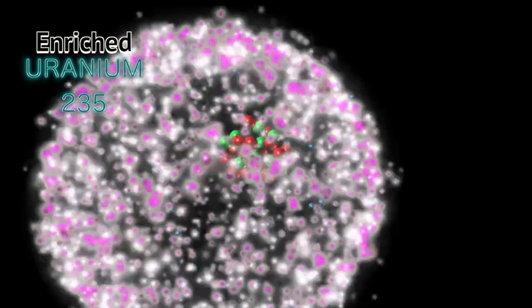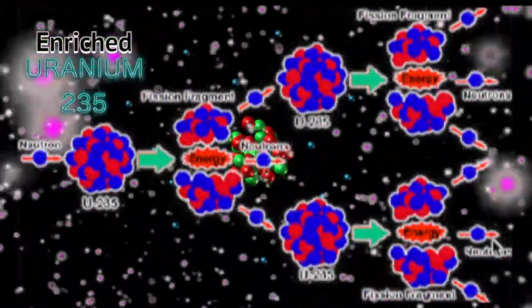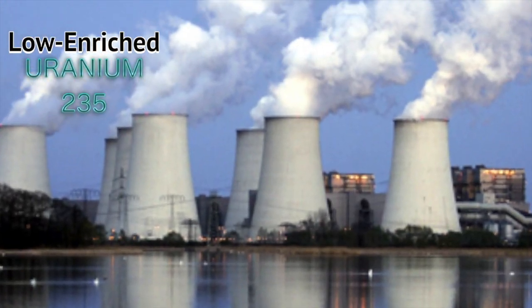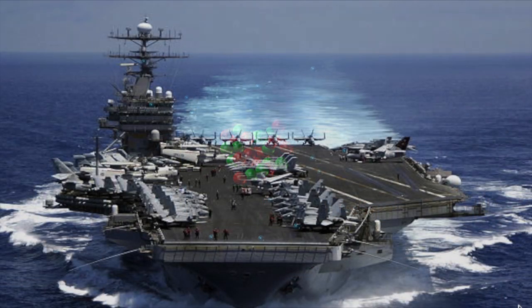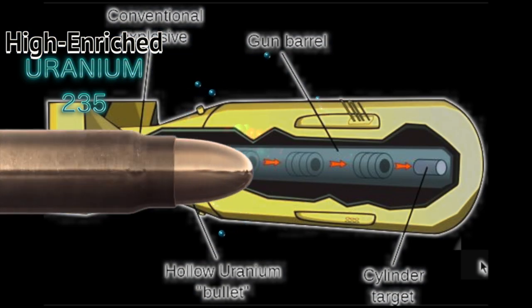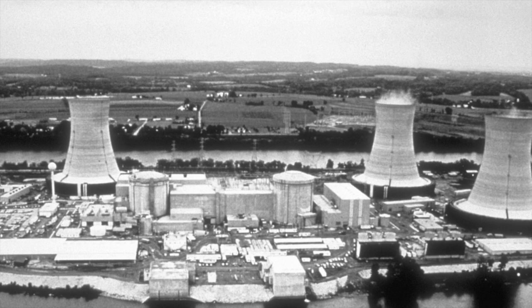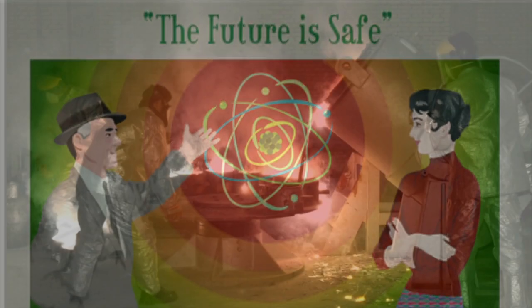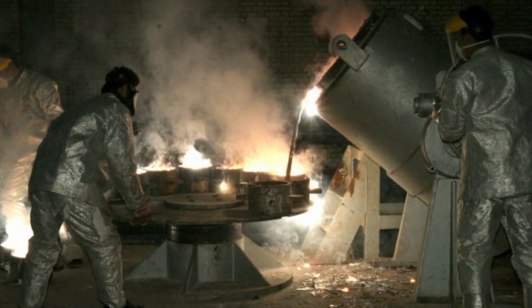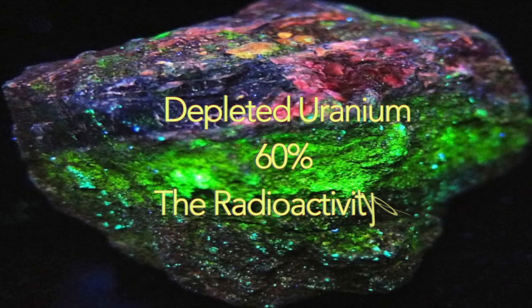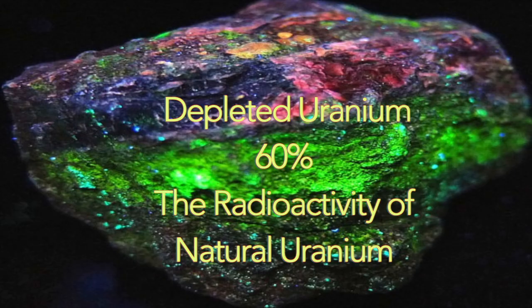Enriched uranium contains more of the fissionable Uranium 235, which is the energy source used for reactors and weapons. Low enriched uranium is used in civilian reactors. High enriched uranium is used in naval reactors and for weapons production. The enrichment of uranium for nuclear weapons began in the 1940s, and its use in energy production began in the 1950s. Depleted uranium is created as a byproduct of the uranium enrichment process and possesses about 60% of the radioactivity found in natural uranium.